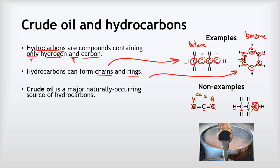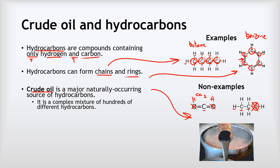Where do we get most of our hydrocarbons from? A major naturally occurring source is crude oil, which — as you can see in the picture — is this kind of thick black sticky liquid that we pull out from deep underground. It is not a single hydrocarbon but a complex mixture of hundreds of different hydrocarbons, and we can use the different hydrocarbons in it for all sorts of things.